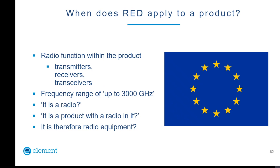Now, if you look inside the Radio Equipment Directive, there are some types of radio equipment which are specifically exempt from the RED. For example, if you have radio equipment which is only for national defence or military use and can't be used in any other situation, then that would be exempt from the RED. There are a few other exemptions, but for the most part, for commercial, business, and domestic radio equipment, the Radio Equipment Directive applies.